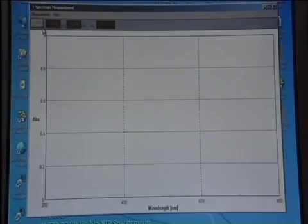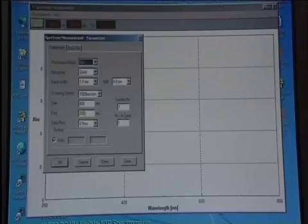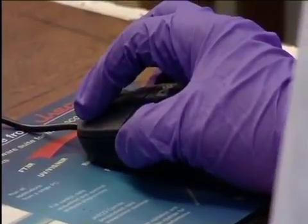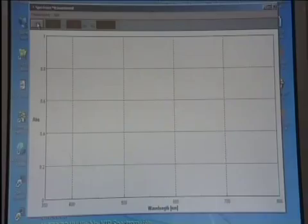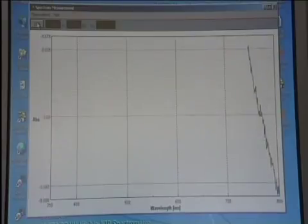The operator types details such as the wavelength range required and scanning speed into the computer that controls the instrument. He also zeros the instrument at a point where the sample does not absorb and then starts the scan.